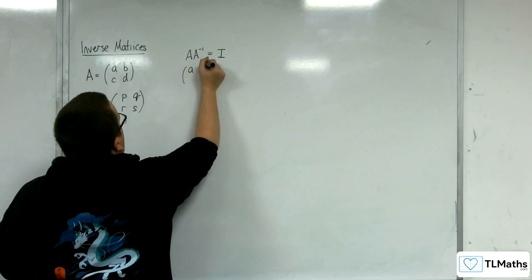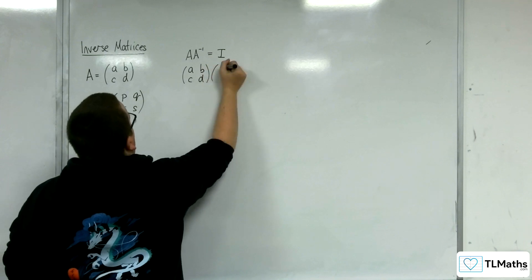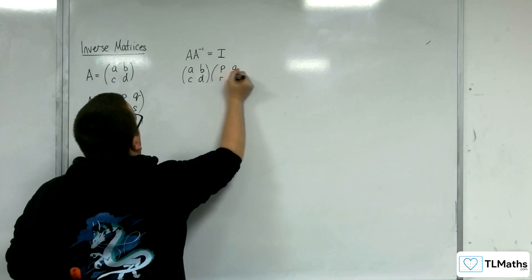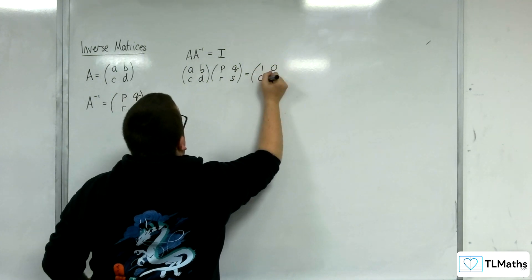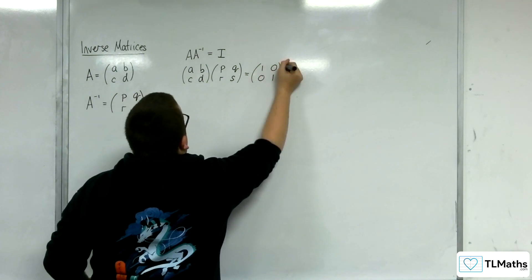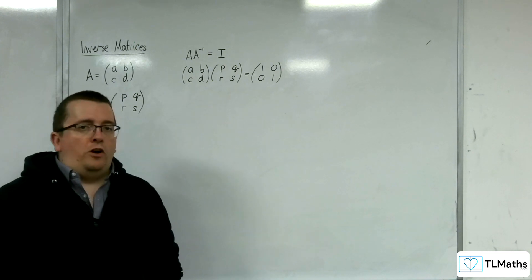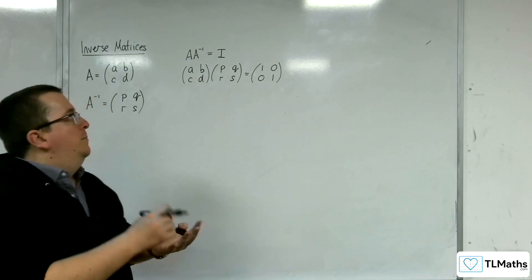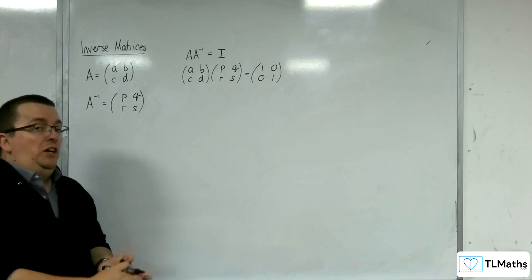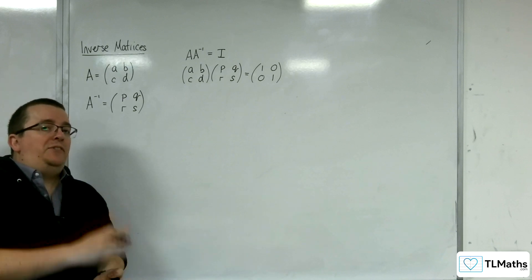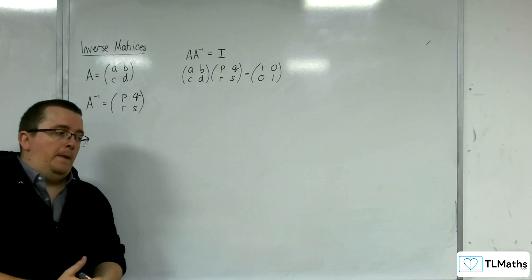So A, B, C, D must multiply with P, Q, R, S in order to get the identity matrix: 1, 0, 0, 1. Our job is to work out P, Q, R, and S in terms of A, B, C, and D. Because if I know what the original matrix entries A, B, C, D are, then I can work out its inverse matrix.